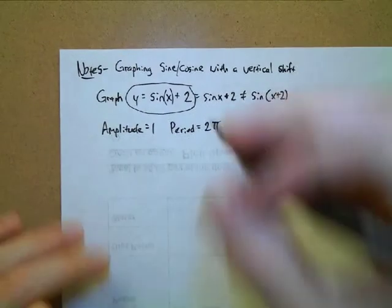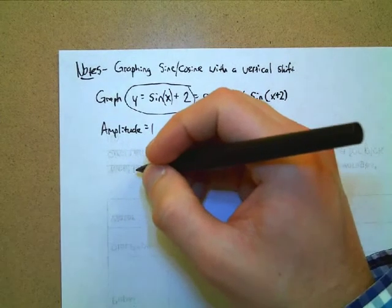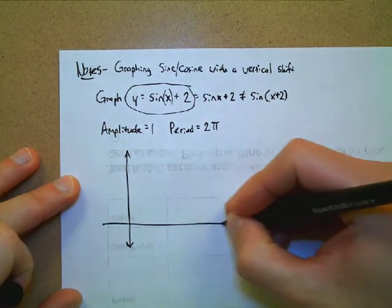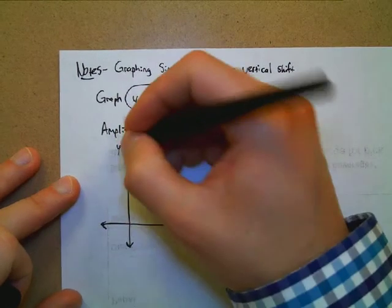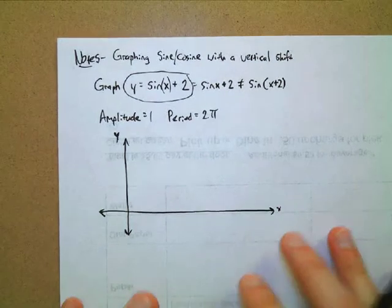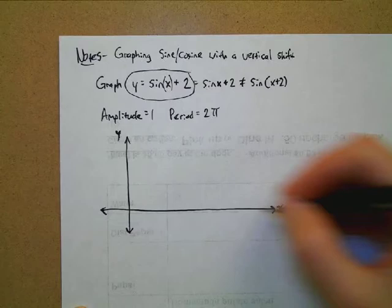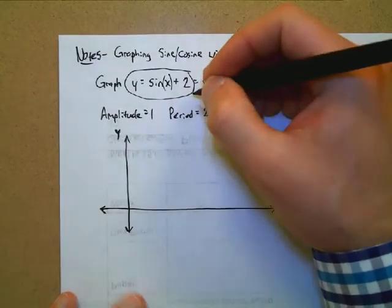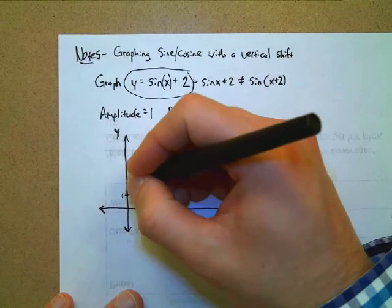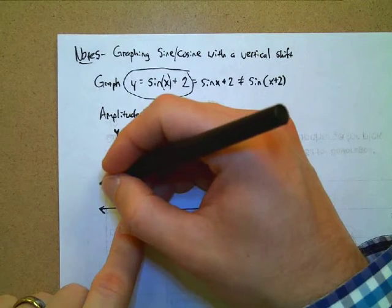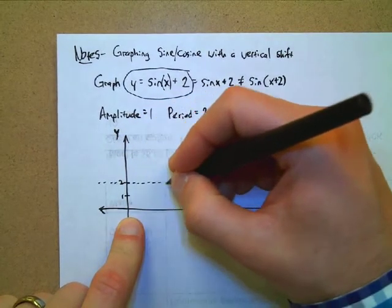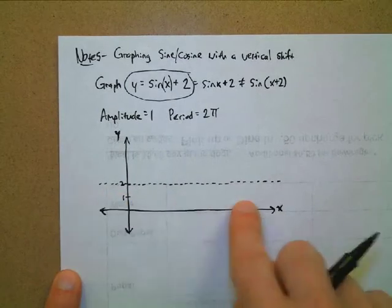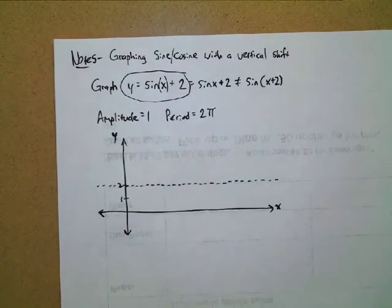Everything gets shifted up two, so I'm going to lower my x-axis when I set up my graph. The untransformed center of my wave is normally the x-axis, but I'm supposed to transform everything up two. So I draw a dotted line at y equals two to remind myself that this is the new center of my wave.